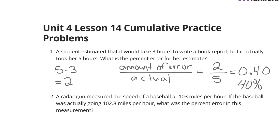A radar gun measured the speed of a baseball at 103 miles per hour. If the baseball was actually going 102.8 miles per hour, what was the percent error in this measurement?